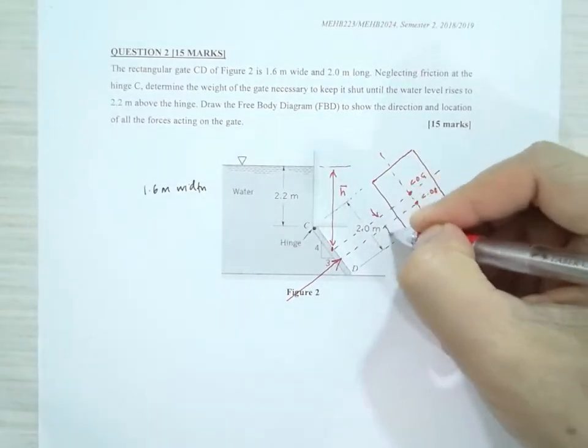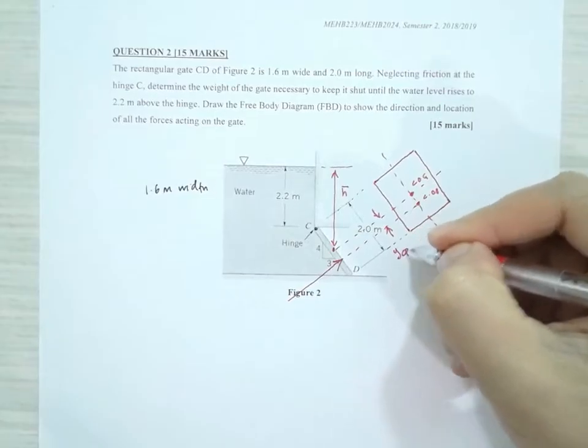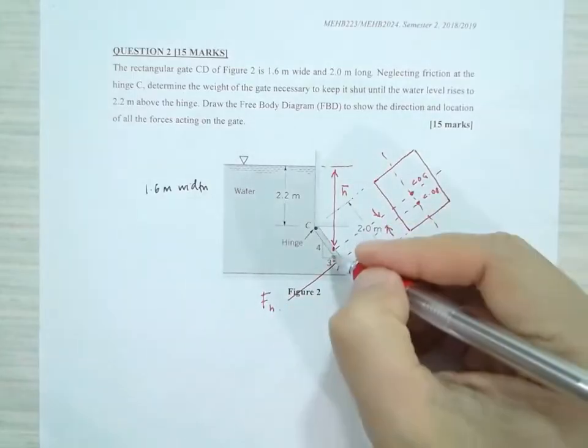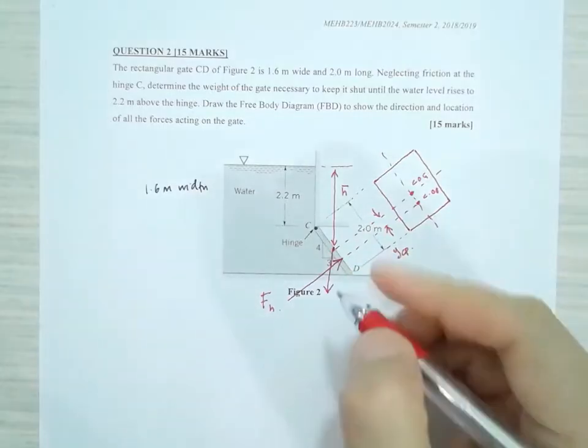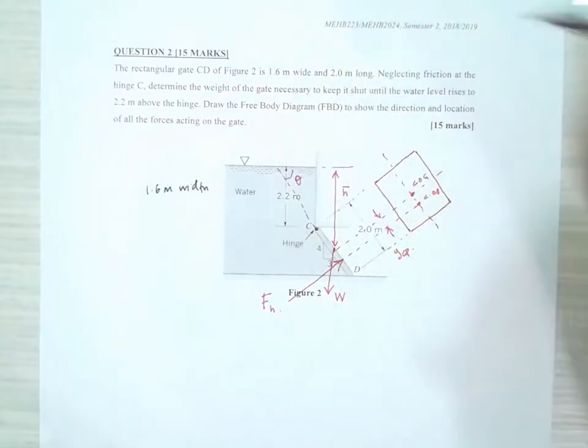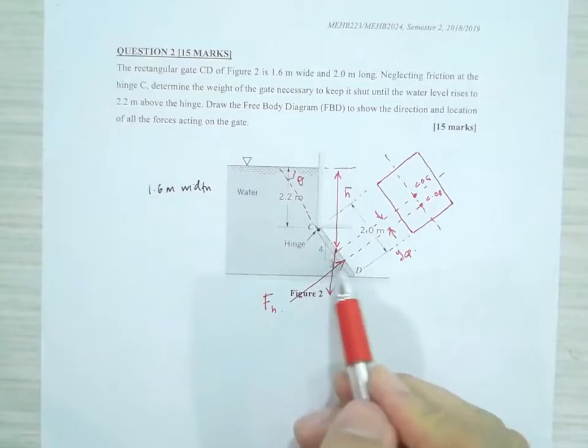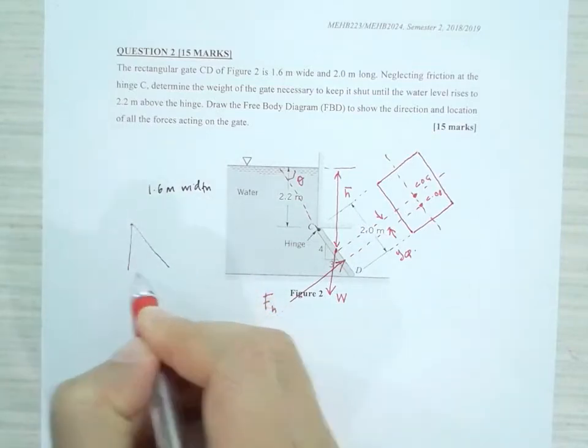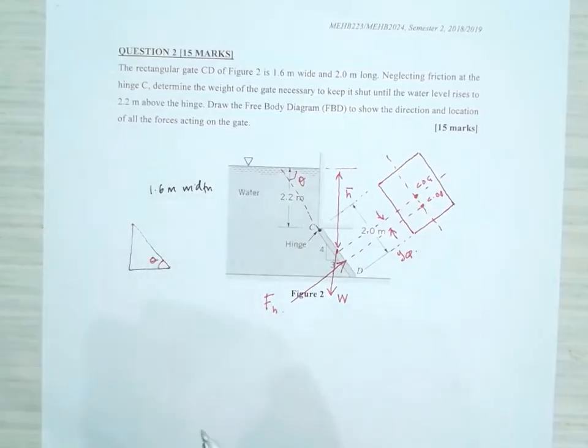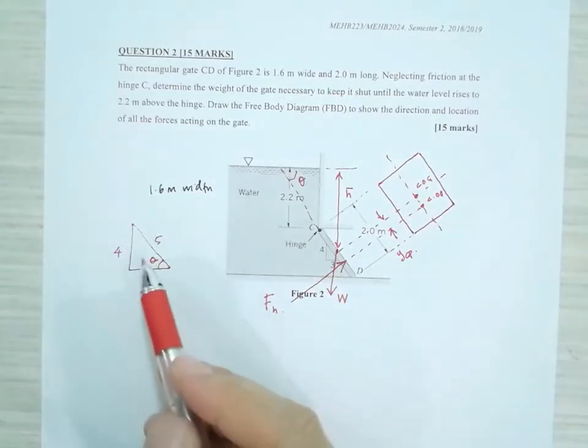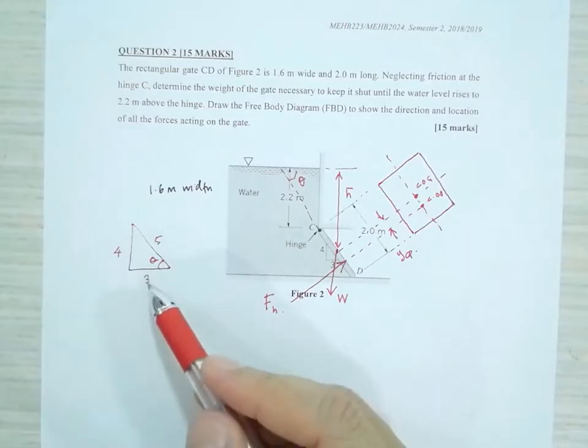This distance here will be our Y_c. This is the hydrostatic force, let's call that F_H. The weight will be acting directly downward here, let's call that W. Let's call this angle theta. Also given that this angle is such that this is 3 and 4, so this must be 5. We can calculate sin θ = 4/5 or cos θ = 3/5.